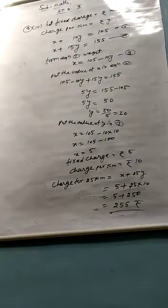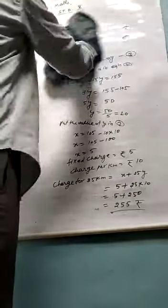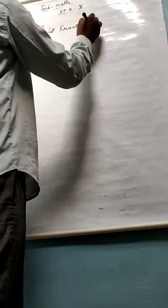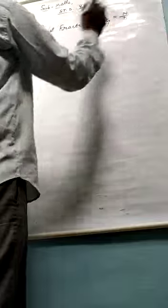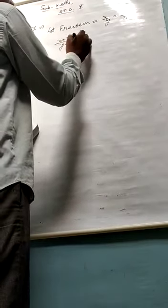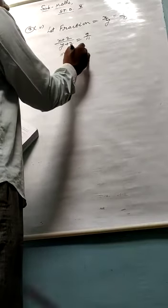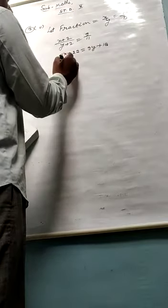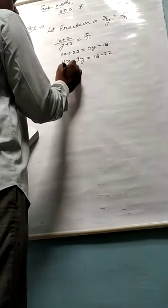Next part. Fifth part. A fraction becomes 9 upon 11 if 2 is added both numerator and denominator. Let fraction equal to x upon y, or numerator upon denominator. If fraction becomes 9 upon 11, if 2 is added both numerator and denominator, x plus 2 upon y plus 2 equals 9 upon 11. Cross multiply, 11x plus 22 equals 9y plus 18. 11x minus 9y equals minus 4. Equation 1.